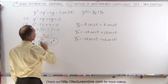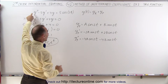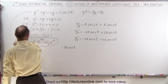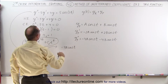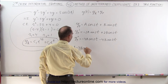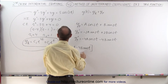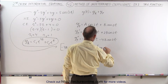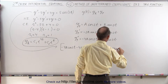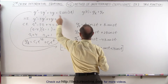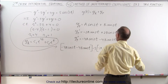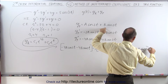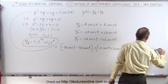Now we're ready to plug everything into the original equation. We substitute y double prime — which is minus 4A·cos(2t) minus 4B·sin(2t) — then minus 5 times y prime — which is minus 2A·sin(2t) plus 2B·cos(2t) — then plus 4 times y — which is A·cos(2t) plus B·sin(2t) — and set that equal to 5 times cosine of 2t.